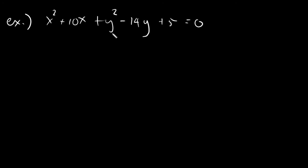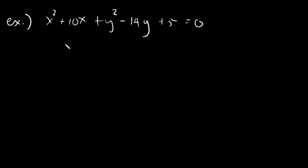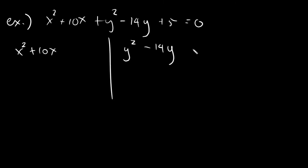The last example is written as x squared plus 10x plus y squared minus 14y plus 5 equals 0. You will notice that these x and y terms are not in perfect square trinomial form — they are not PST. But there is a method called completing the square where you can make these into PST. You will take the x terms separately: x squared plus 10x, and y squared minus 14y, ignoring the constant by transferring it to the other side.